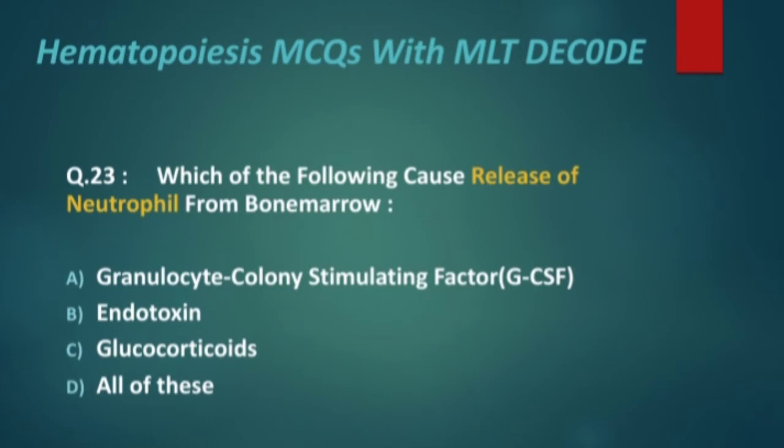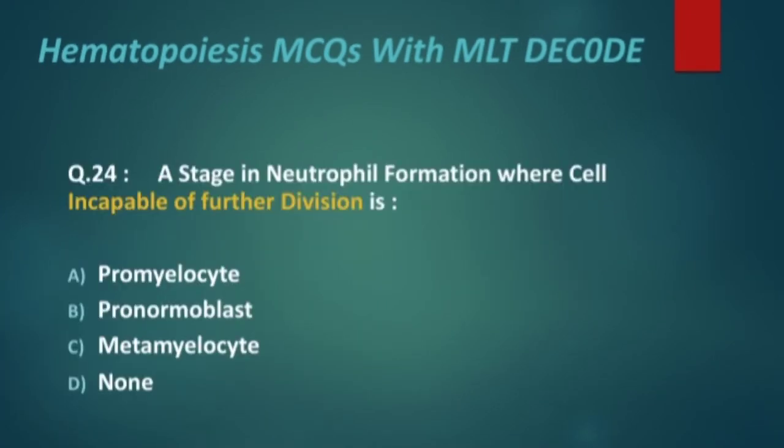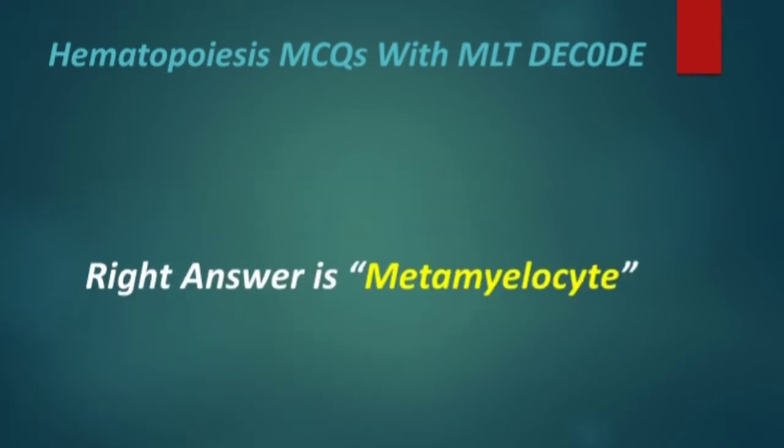The right answer is all of these. Next: a stage in neutrophil formation where the cell is incapable of further division. Options are promyelocyte, pronormoblast, metamyelocyte, and none. The right answer is metamyelocyte.